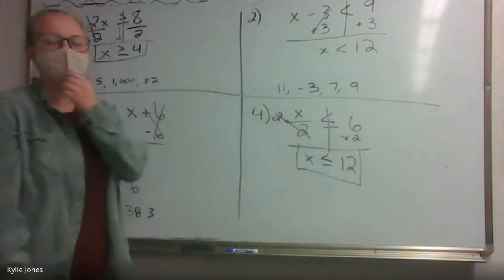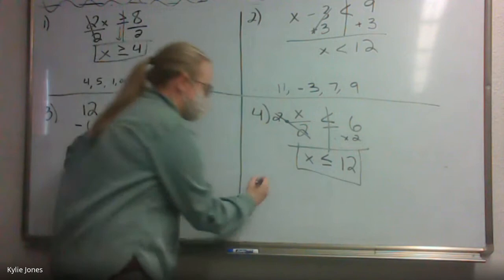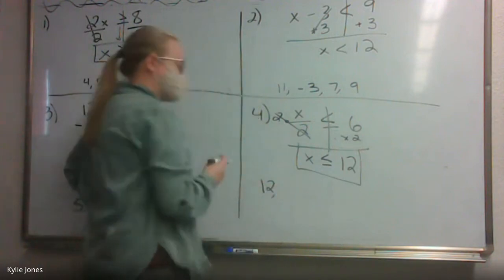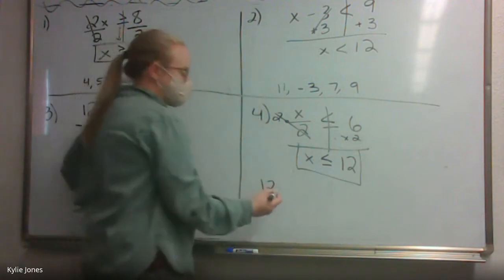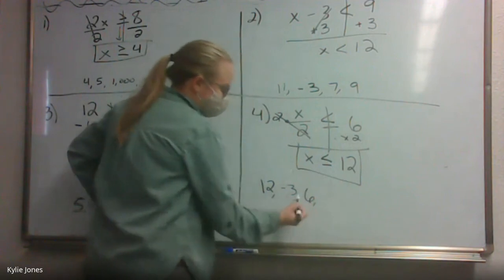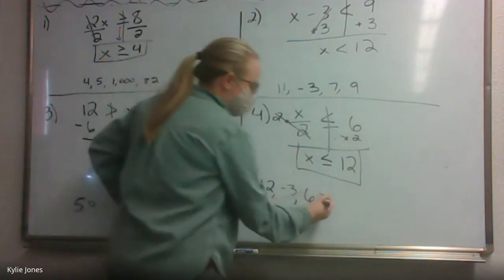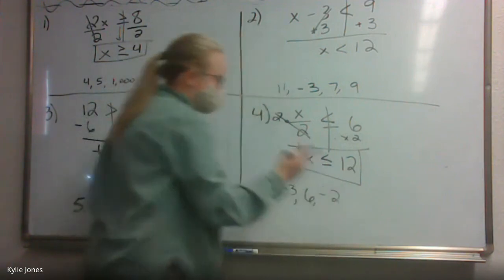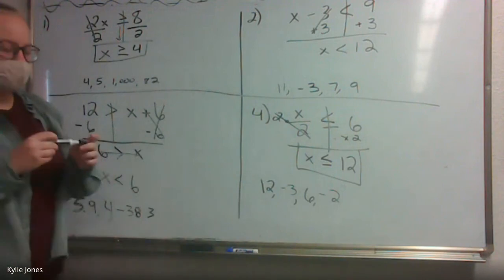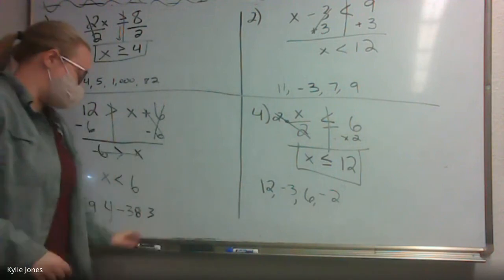What sort of solutions can I have? 12 — because we have exactly equal to 12. Negative 3, 6, negative 2 — lots of options. So there are our inequalities for that. A little bit of review before we get into what we're going to do now.